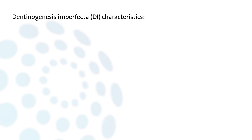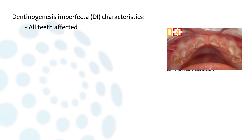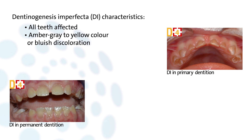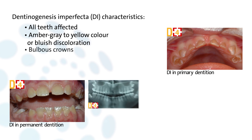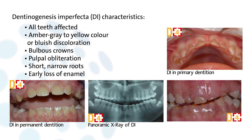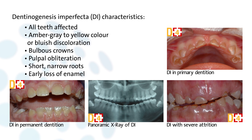Dentinogenesis imperfecta is a genetic disorder of dentine. All teeth are affected. It is characterized by an amber-gray to yellow or bluish discoloration of the teeth, and by relatively bulbous crowns, pulpal obliteration, and short, narrow roots. The early loss of the enamel, particularly from incisal and occlusal surfaces, exposes the soft dentine to occlusal forces that can lead to severe attrition, and periapical pathology is possible.